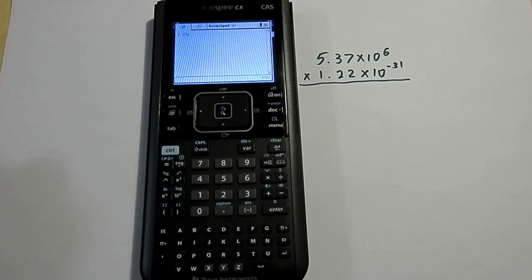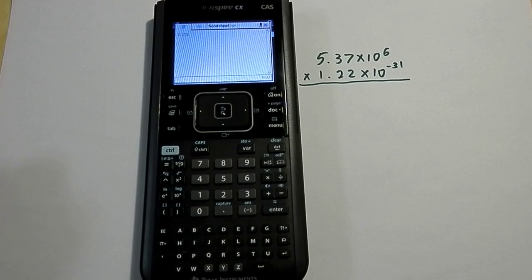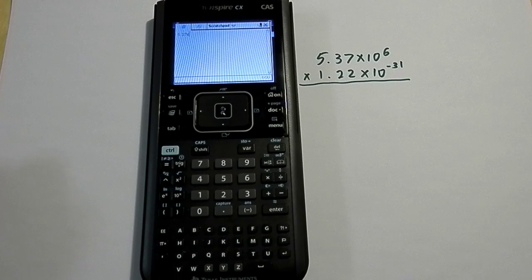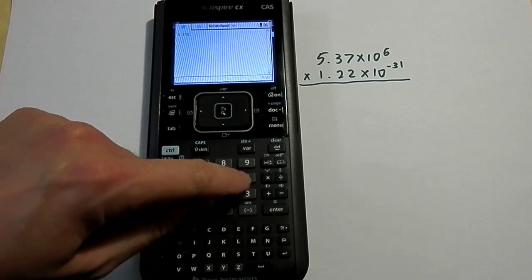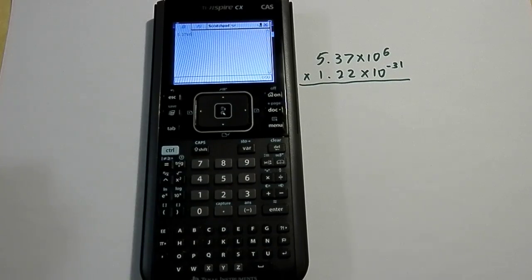As soon as I hit the EE button, the calculator knows that I'm going into scientific notation and it's doing the times 10 to the whatever for me in the background. So now I'm just going to hit 6 because it is 5.37 times 10 to the 6.